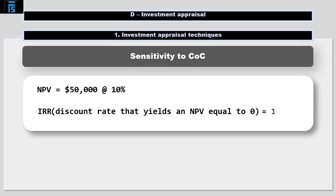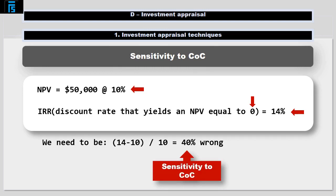Suppose for our project the IRR has been calculated at 14%. This means if our estimate for the cost of capital of 10% turns out to be wrong, it will change our decision if the cost of capital turns out to be 14% or higher, because at that point the NPV equals zero. In other words, we would need to be 14 minus 10 divided by 10 equals 40% wrong. We are 40% sensitive to our estimate for the cost of capital.